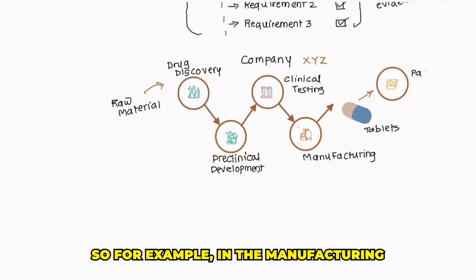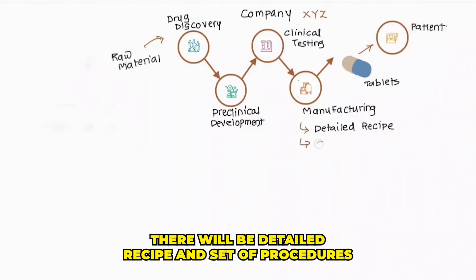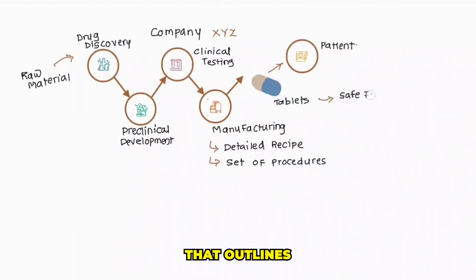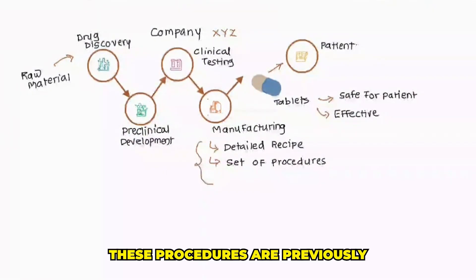For example, in the manufacturing, there will be detailed recipe and set of procedures that outlines how to manufacture the drug safely and effectively. These procedures are previously established requirements.